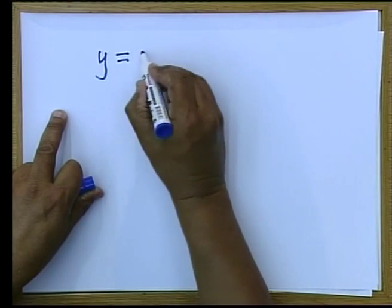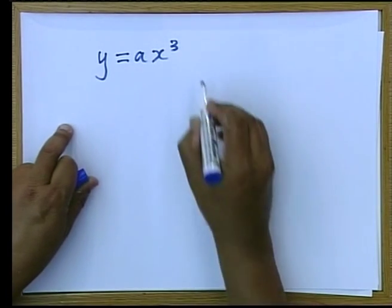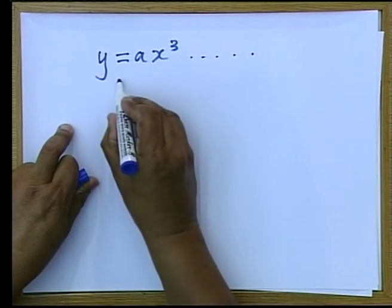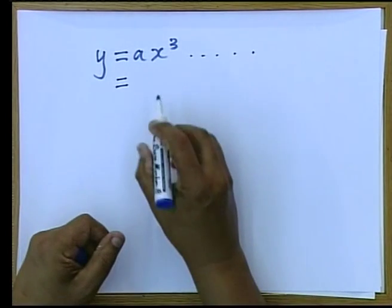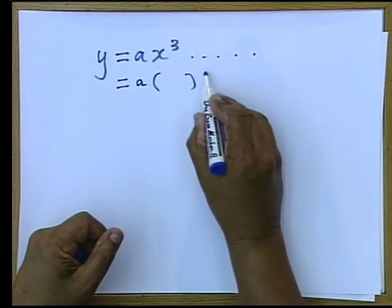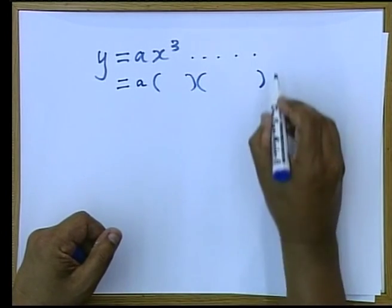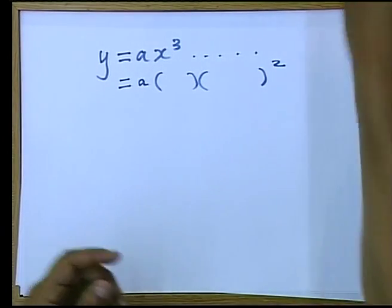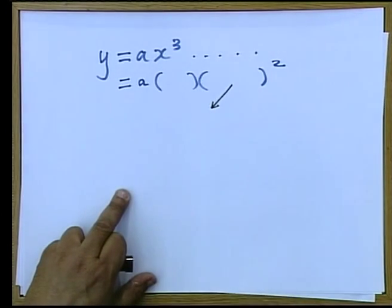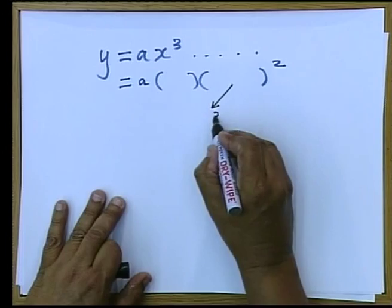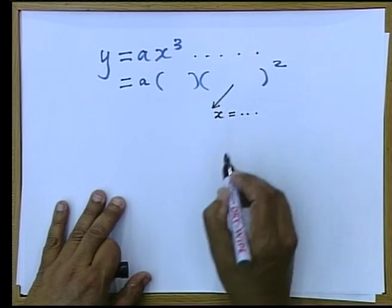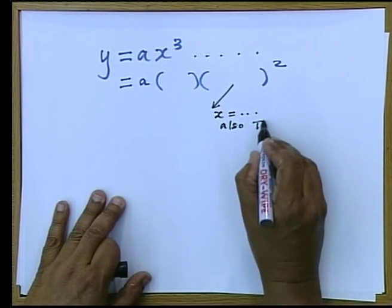If we go back to where we started, we started with the cubic graph, y equals ax cube, and we were saying that in this particular instance, we actually found in the first question that we had that one of the factors was repeated. Hence, the x value that we get over there will also be a turning point.